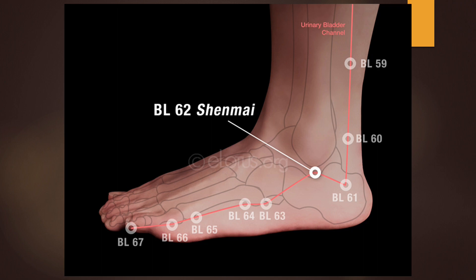Bladder 62 is used if the pain is unilateral and radiates down to one leg; selected also when the pain radiation down the leg affects more than one channel. Location: in the depression directly below the external malleolus. Classification: master point of the Yang Qiao vessel, coupled with SI3. Functions: dispels interior wind, benefits the eyes and head, relaxes the sinews, treats epilepsy, calms the shen. Bladder 62 is an excellent point for neck and back issues when coupled with SI3. Needling: perpendicular insertion 0.3 to 0.5 cun.